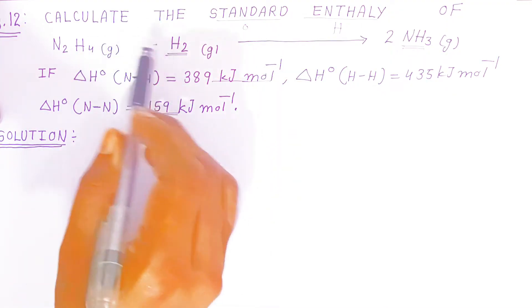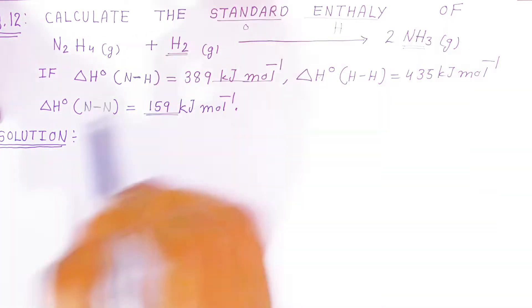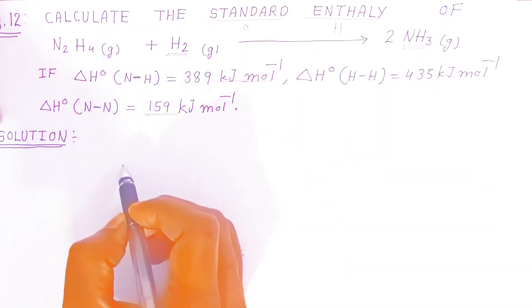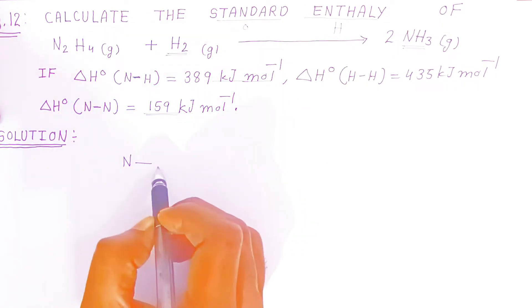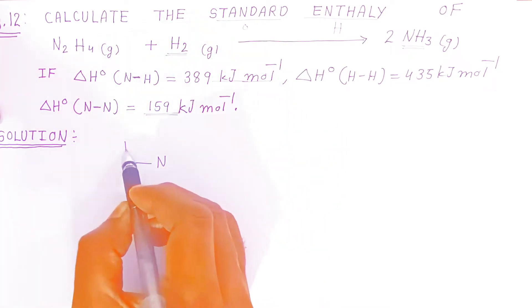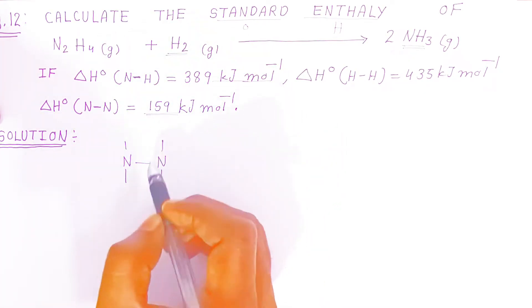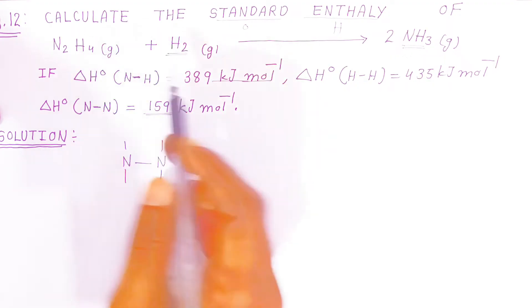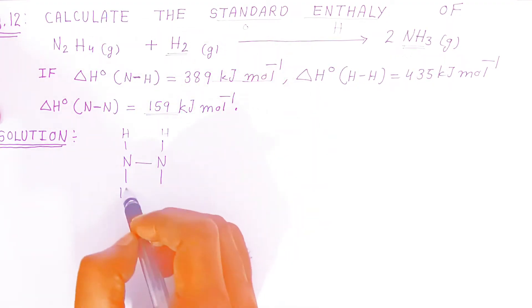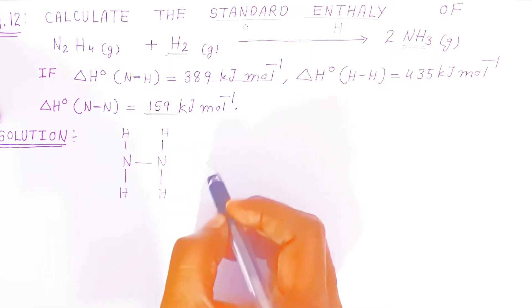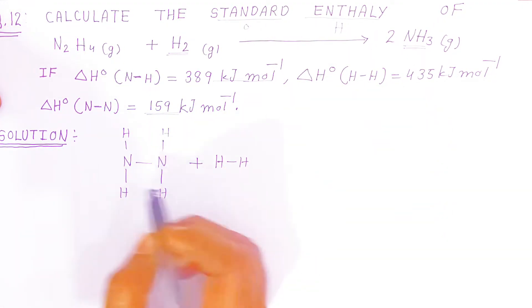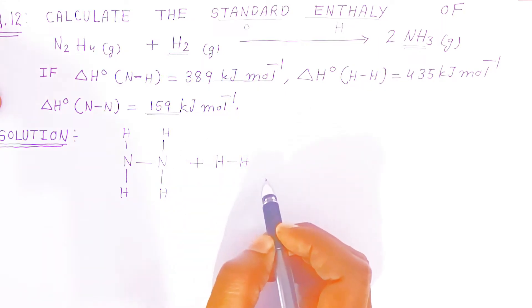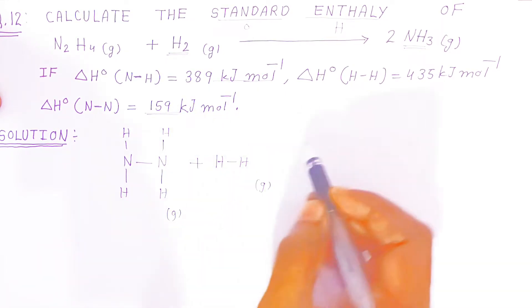To solve this, we represent the reaction structurally. For N₂H₄, nitrogen is trivalent, so nitrogen bonds with nitrogen, and then four hydrogens are attached, giving us the N₂H₄ structure. For hydrogen gas, we have one H–H bond. These are the reactants: dinitrogen hydride reacting with hydrogen gas.